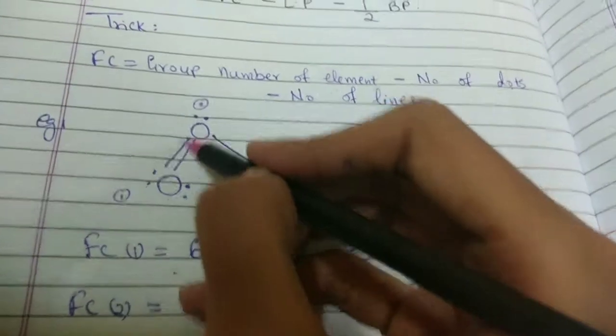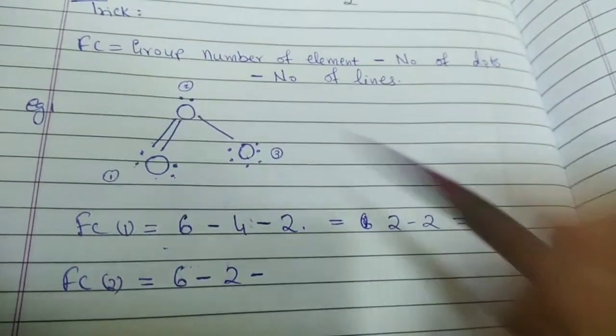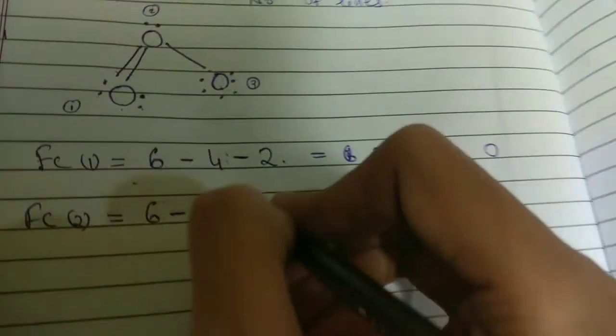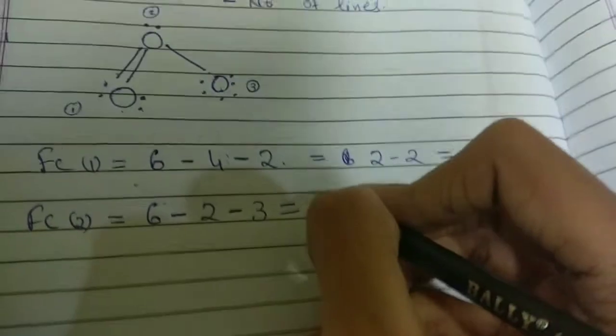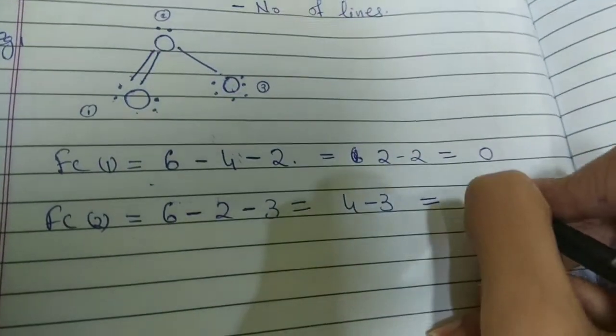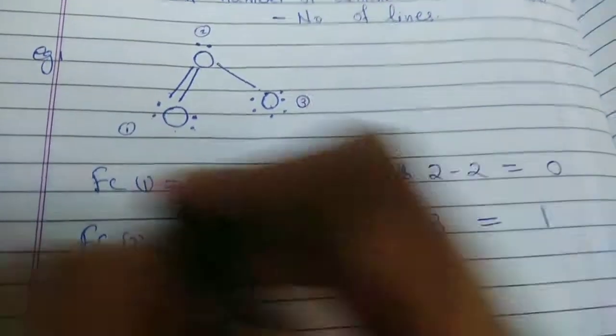So, this oxygen is linked to 2 oxygen, 1 via a double bond and 1 through a single bond. So, there are in all 3 bonds, right, or 3 lines as we say. So, that is what we write 3. So, 6 minus 2 minus 3 is nothing but 4 minus 3 which becomes plus 1 or only 1. So, that was for the second one.